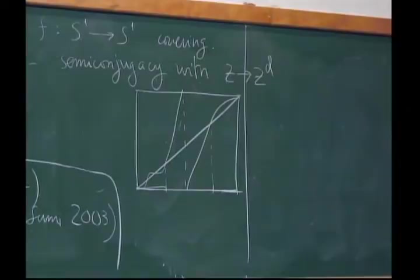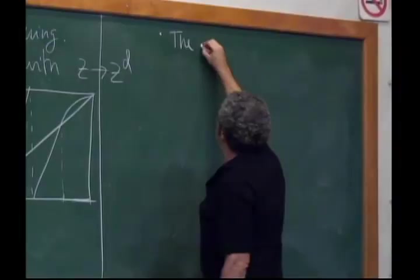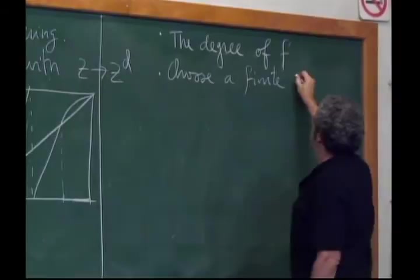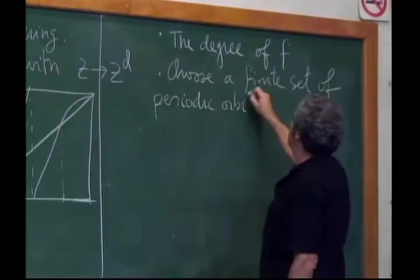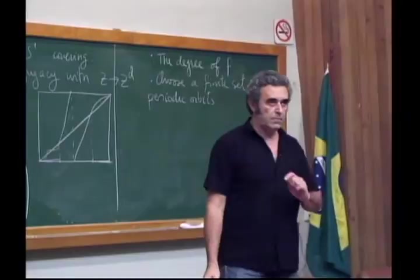It is easy to see that the following finite data classifies the conjugacy class of a stable map: you give the degree of f, you choose a finite set of periodic orbits, and for each such orbit you open a window.